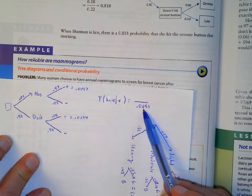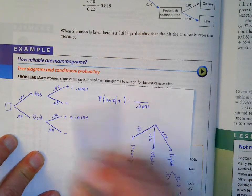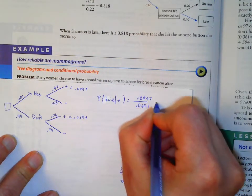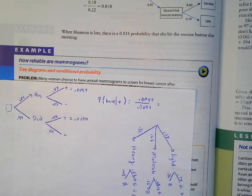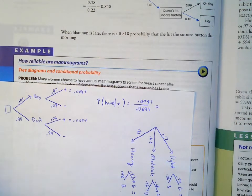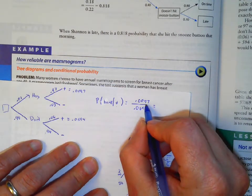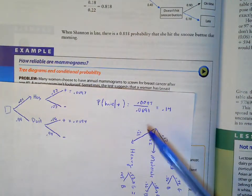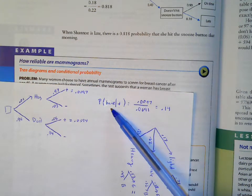Of those who test positive, the ones who actually have cancer are the 0.0097. Dividing 0.0097 by the total who test positive gives 0.14 — about 14%. So if somebody tests positive, only about 14% of those people actually have breast cancer.